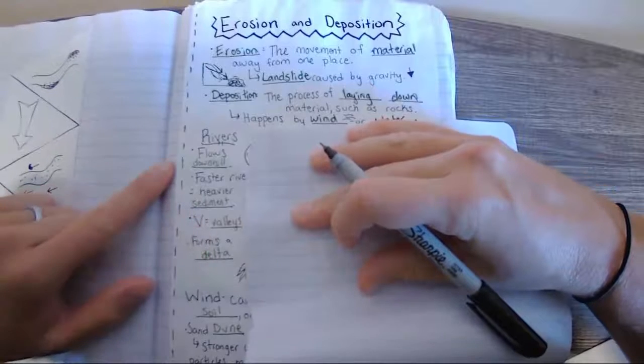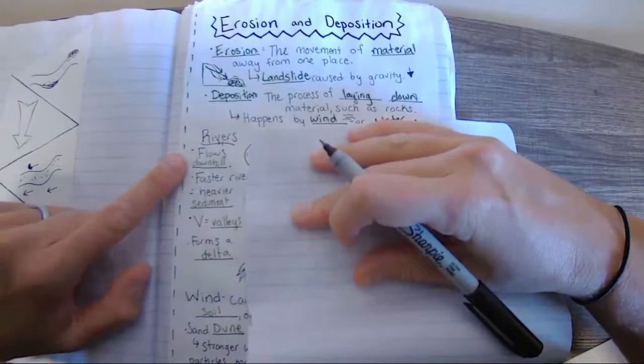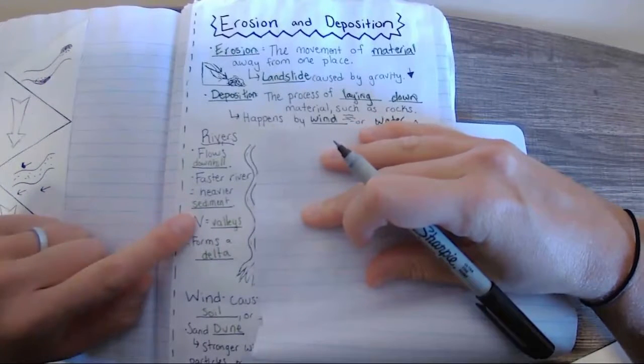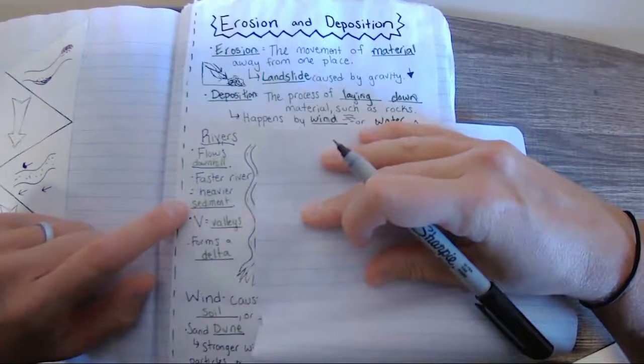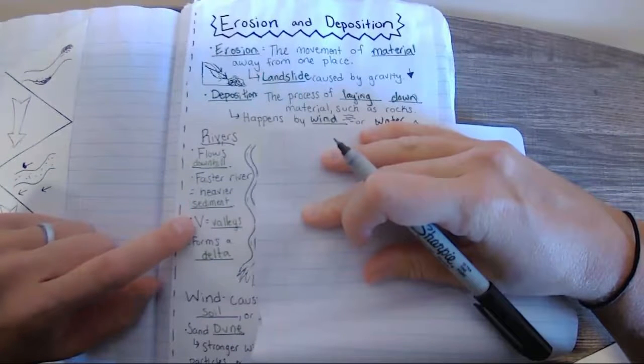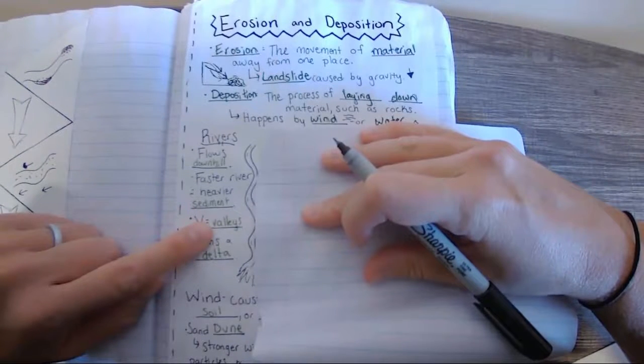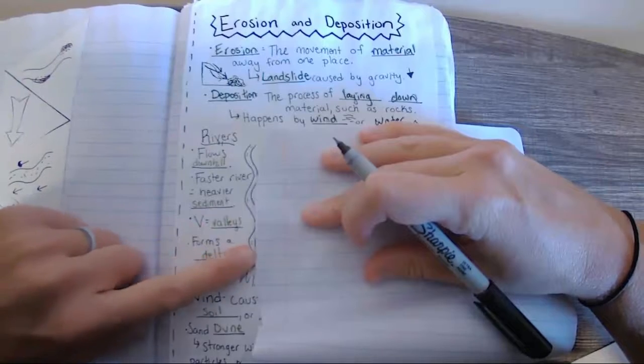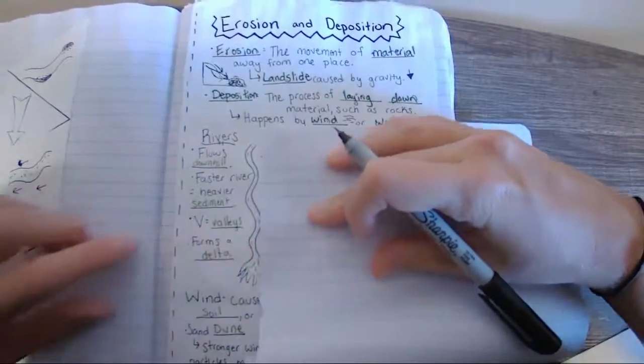Rivers flow downhill. Faster rivers can carry heavier sediments. These form v-shaped valleys. And at the end, they can form a delta. So here I have a little picture of a river with our delta down here.